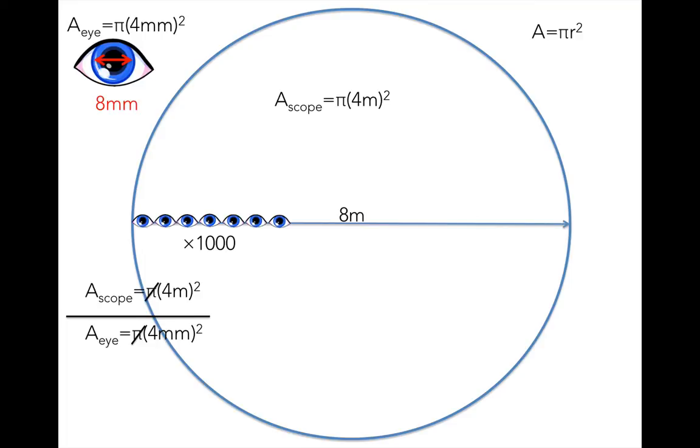Before you run to your calculator, notice that the pies cancel, so we don't have to remember what it is. The 4s can actually cancel here, too, and we're left with just 1 meter squared divided by 1 millimeter squared. Since the question we're asking is how many of these things on the bottom, human eyes, fit inside of the thing on the top, a big telescope, the answer should not have any units at all. So we need to get rid of the meters and the millimeters.